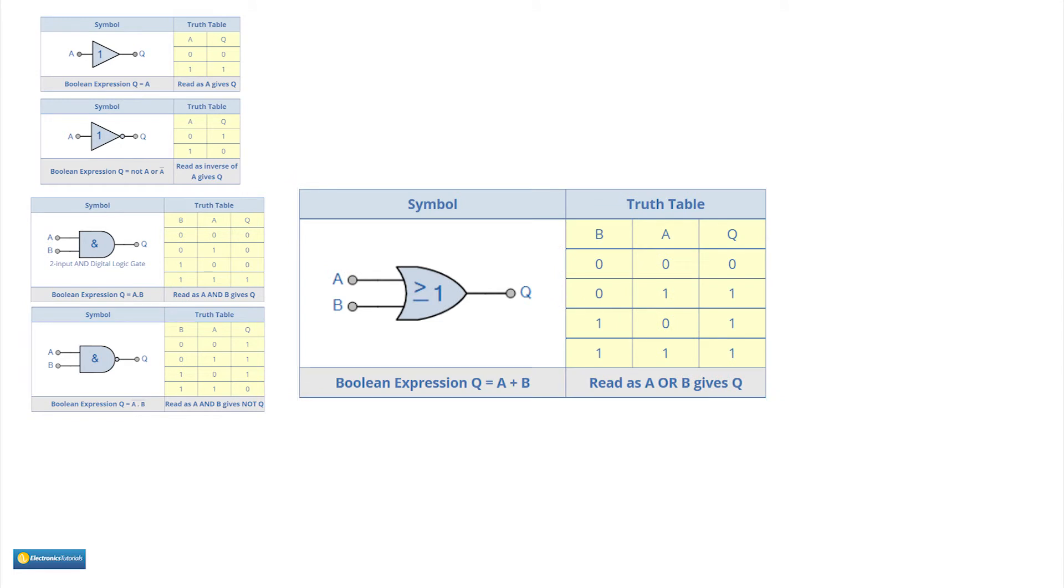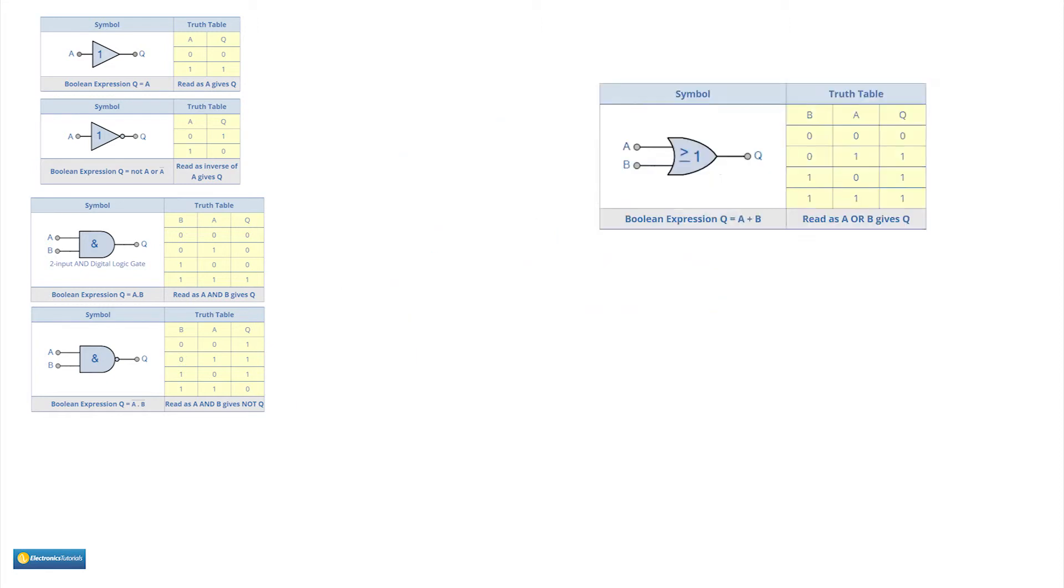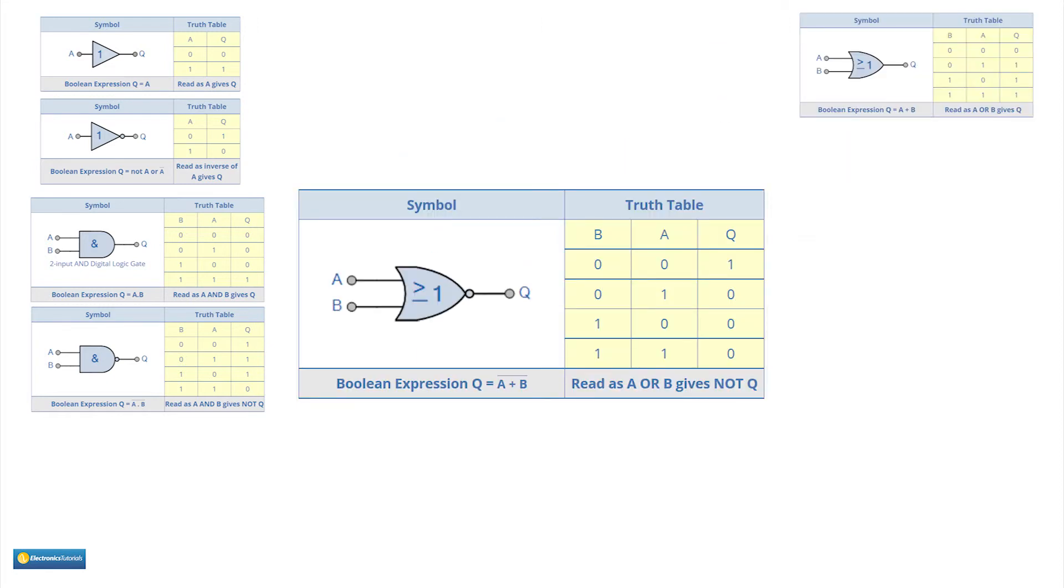This is the symbol and truth table for the OR gate. OR because if A or B goes high the output goes high. We can add a NOT to the OR to give a NOR gate with this truth table.